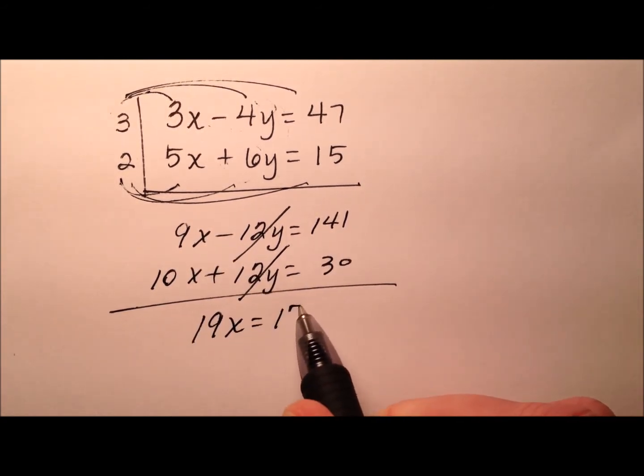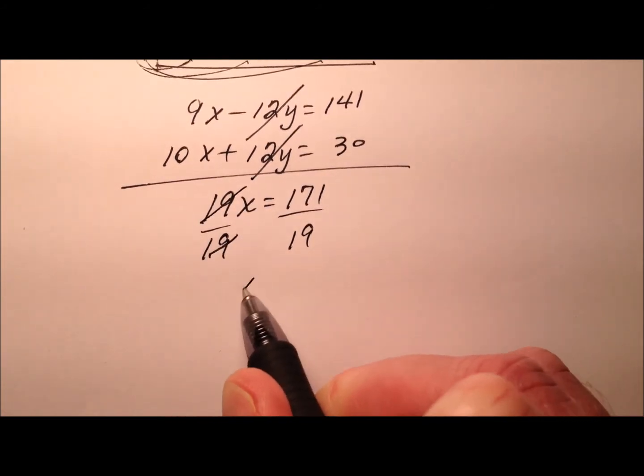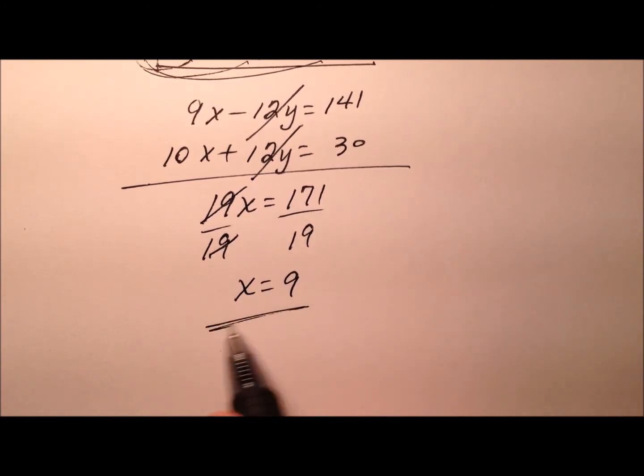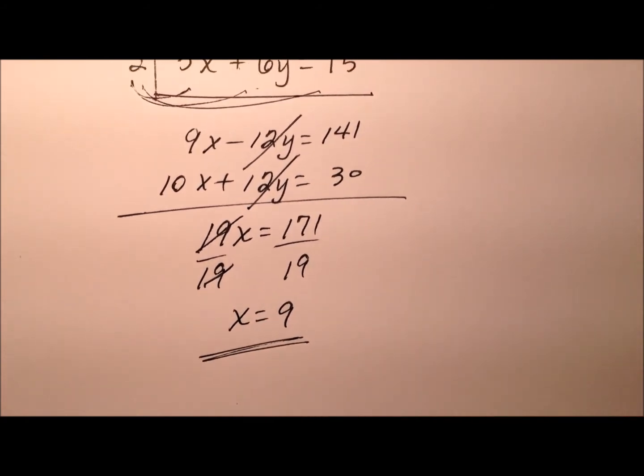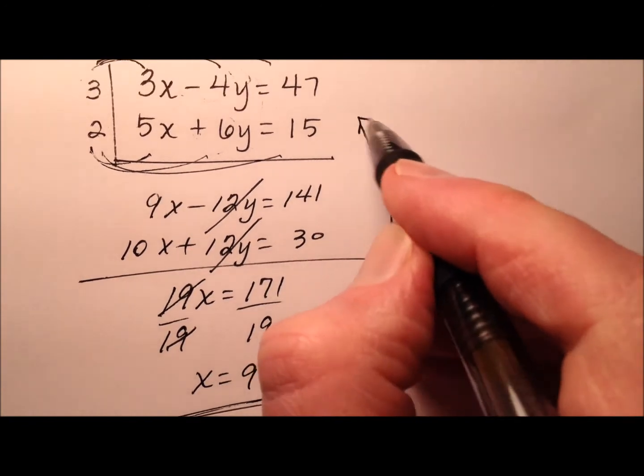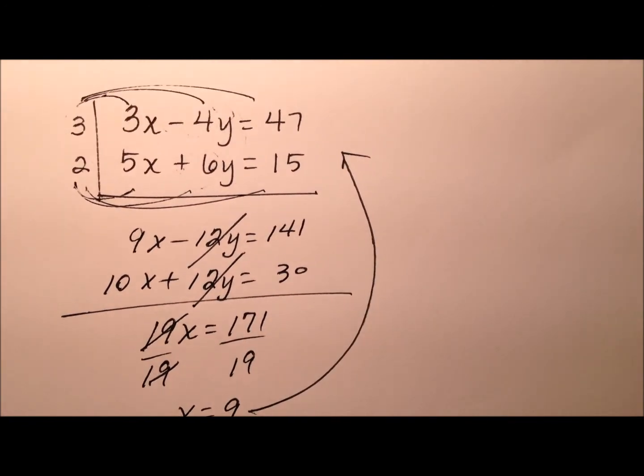So 19x equals 171. So division by 19 will give us x equals 9. Well, that's not too bad at all.